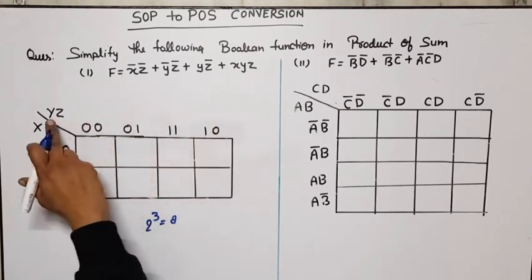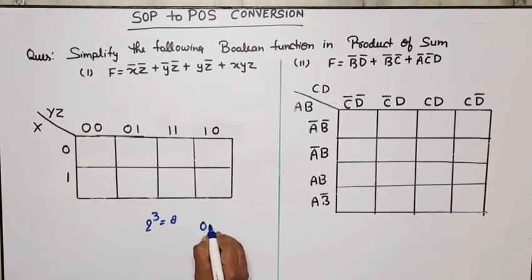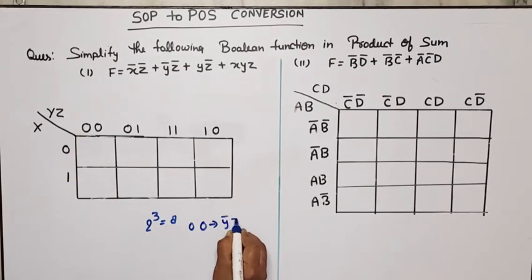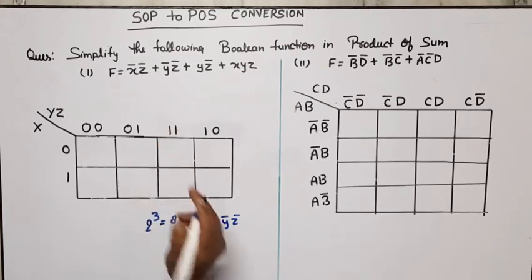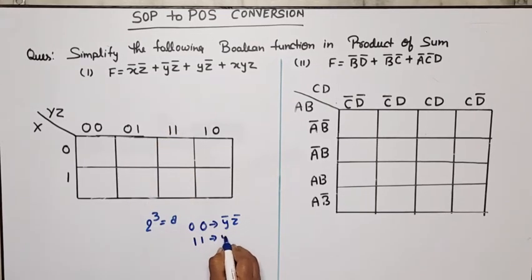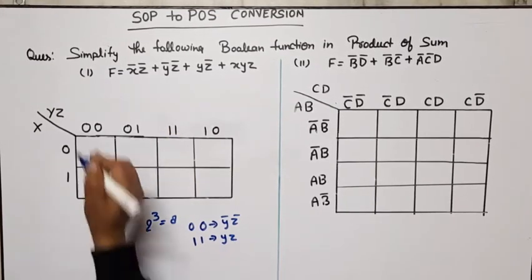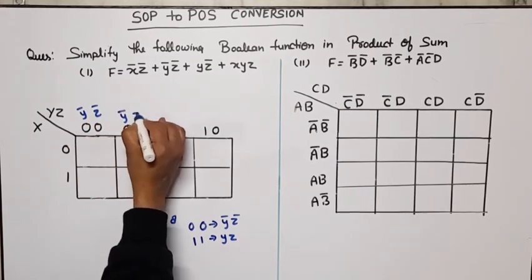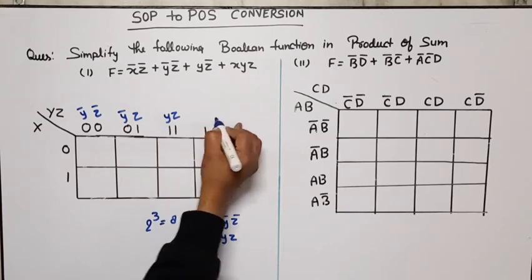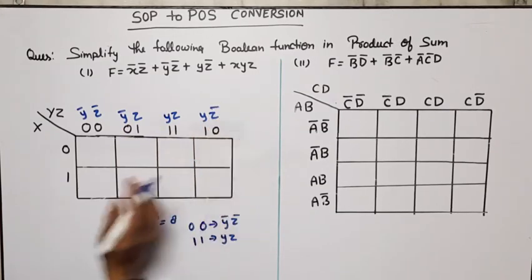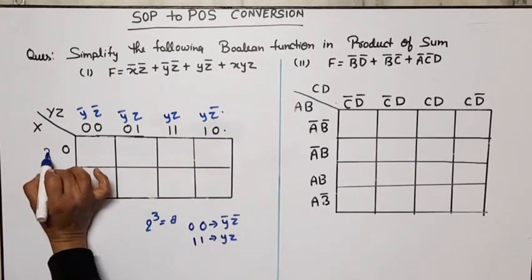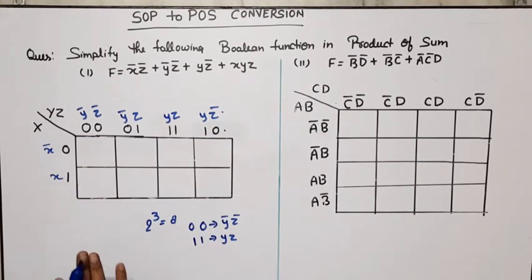On the row axis I have taken x, and on the column axis I have taken yz, where 0 represents a bar — for example, 00 represents ȳz̄, and 11 represents yz. So the columns are ȳz̄, ȳz, yz, yz̄. You can write binary bits or variables — your choice.